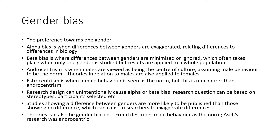Gender bias can be built into research design, unintentionally causing either alpha or beta bias. For example, the research question can be based on stereotypes, or it's impacted by the participants selected. Studies showing a difference between genders are more likely to be published than those showing no difference, which can cause research to exaggerate differences. Theories can also be gender biased — Freud describes male behavior as a norm, and Asch's research was androcentrism.